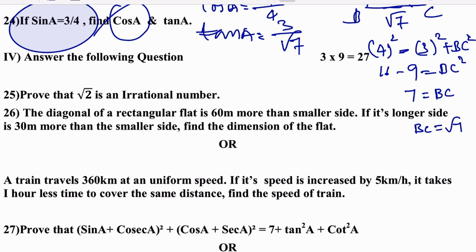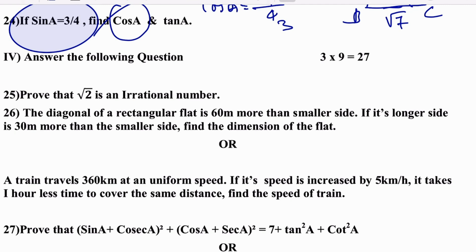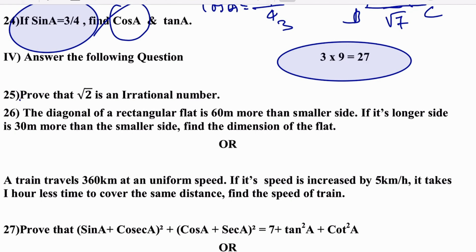Now we will discuss the 3-mark questions. The same questions are repeating here as well. First: prove that √3 is an irrational number — this is the same question as before.